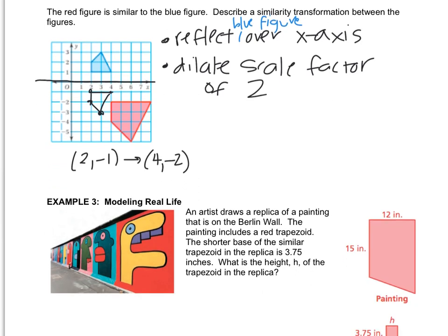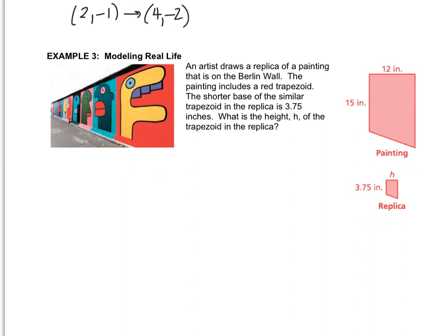All right, let's check out one more. An artist draws a replica of a painting that is on the Berlin Wall. The painting includes a red trapezoid. The shorter base of the similar trapezoid in the replica is 3.75 inches. What is the height of the trapezoid? So even though it's going across in this picture, we still call it the height. In a trapezoid, you have two parallel sides, so the height is what connects those two parallel sides.